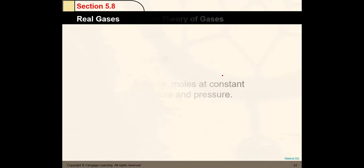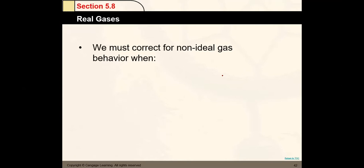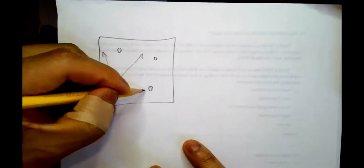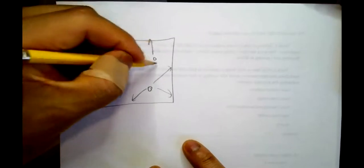Now let's talk about real gases. Real gases deviate from ideal behavior, especially at high pressures. When pressure is very high, gas particles get closer to each other. In the ideal gas law, we assumed the probability of particles interacting is negligible — but for real gases at high pressure, this assumption breaks down.